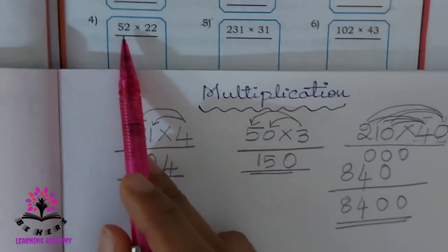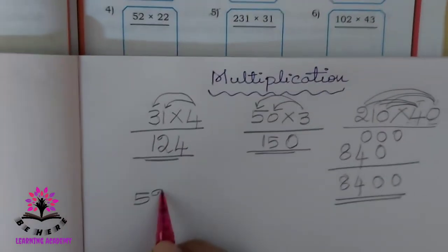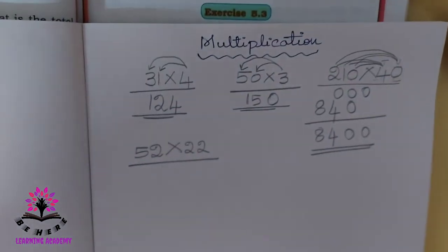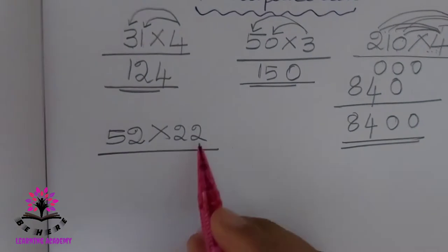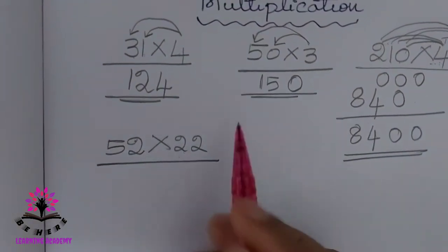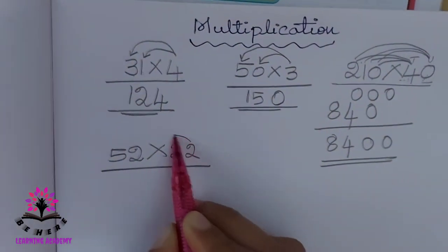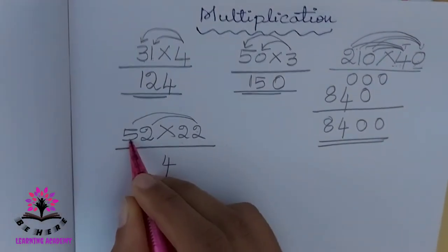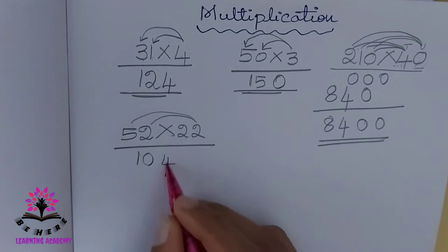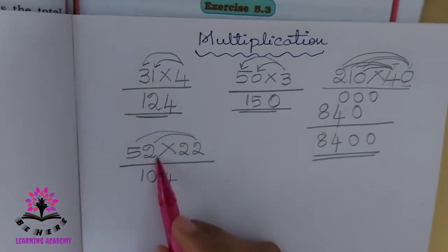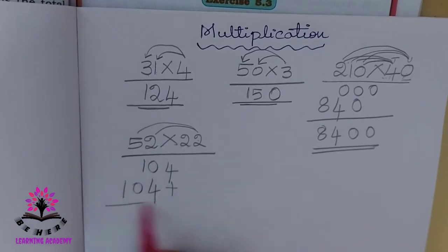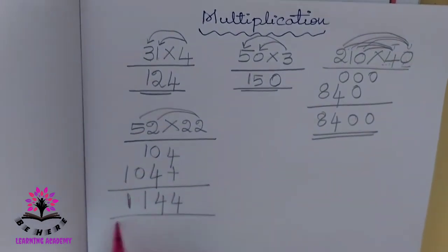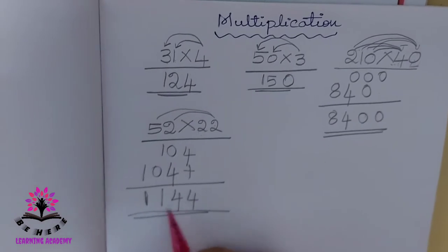Now see this one: 52 into 22. Here also there are two numbers. We have to begin with the unit place. First multiply by 2: 2 times 2 is 4, 2 times 5 is 10. Here leave one place. Then 2 times 2 is 4, 2 times 5 is 10. Adding: 4, then 0 plus 4 is 4, then 1 plus 0 is 1, carry 1. So the answer is 1,144.